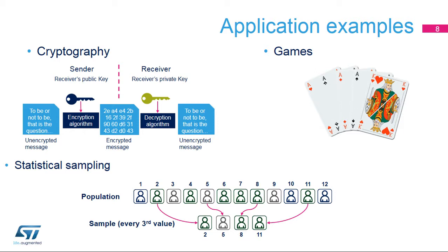The RNG can be used for a wide range of applications, including cryptography, games, and statistical sampling. For example, all the security of cryptography algorithms is connected to the impossibility of guessing the key. So the key has to be a random number, otherwise the attacker can guess it.